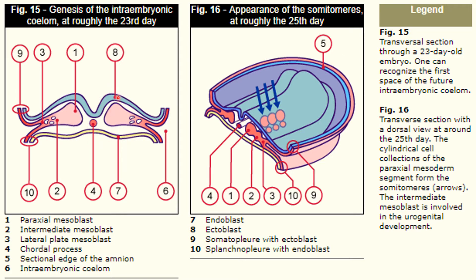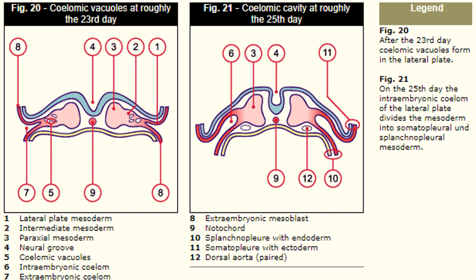Number eight is the ectoblast, and number nine is the somatopleural and splanchnopleural with endoblast as number ten. Other parts of the 23-day embryo can also be found on a different view. This transverse section shows the dorsal view at around the 25th day of development, with coelomic vacuoles visible at roughly 23 days. The legend identifies parts and their changes from day 23 to day 25 of development.